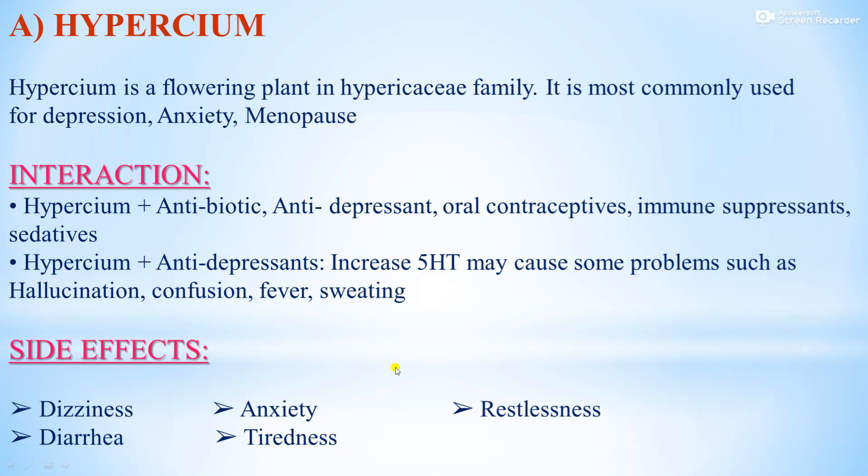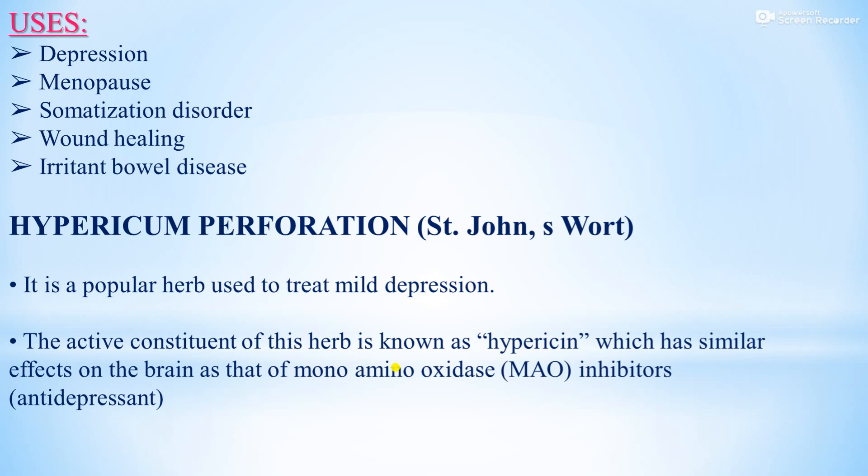When Hypericum is taken with antidepressant drugs, they increase serotonin (5-hydroxytryptamine) levels and may cause hallucination, confusion, fever, and sweating. Side effects include dizziness, diarrhea, anxiety, tiredness, and restlessness. Uses of Hypericum include depression, menopause, somatization disorder, wound healing, and irritable bowel disease.